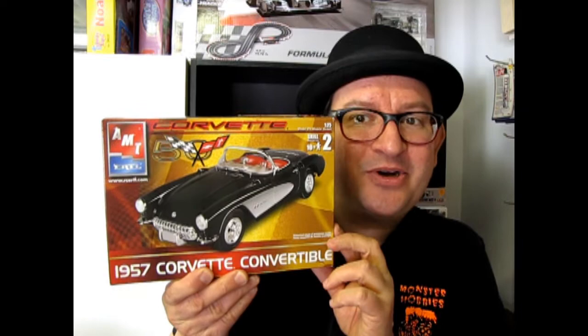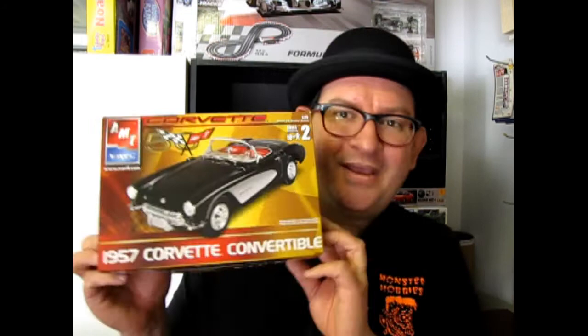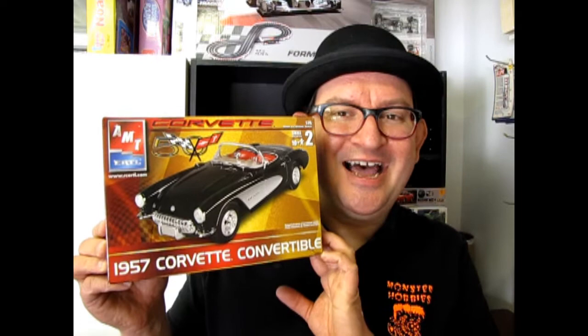The 1957 Chevrolet Corvette Convertible coming up next on Monster Hobbies What's in the Box? Hello once again classic car fans and model kit builders, my name is Trevor Urselescu and I'm the owner of Monster Hobbies in High River, Alberta, Canada. Guess what we're going to look at today? Yeah, the 1957 Chevrolet Convertible.